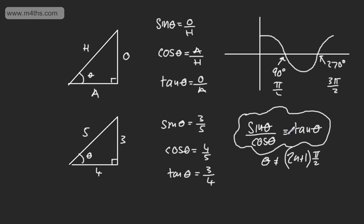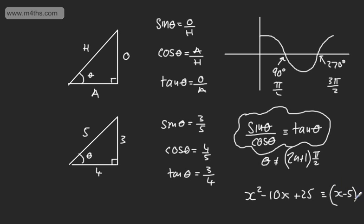What we have here is an identity. Another example of an identity you might have met in the past: take a quadratic, x squared minus 10x plus 25. We could write the identity sign, and this is going to be x minus 5 all squared. So it's not an equation, it's an identity. That's the first one to commit to memory: sine theta over cos theta is tan theta.